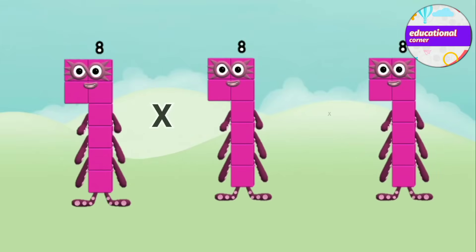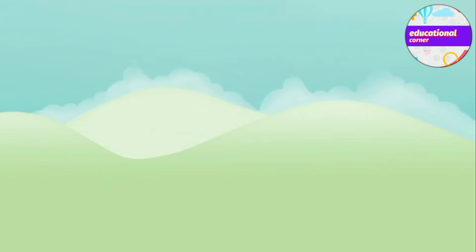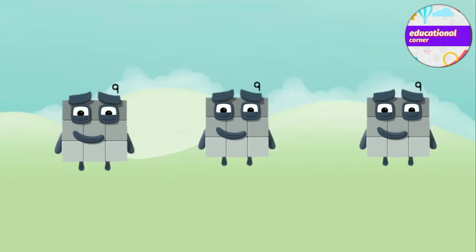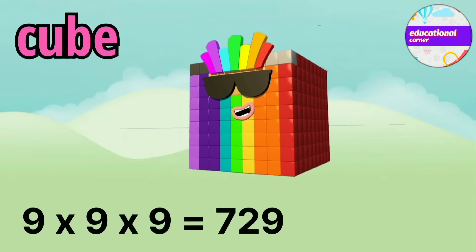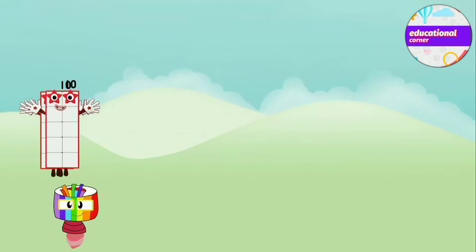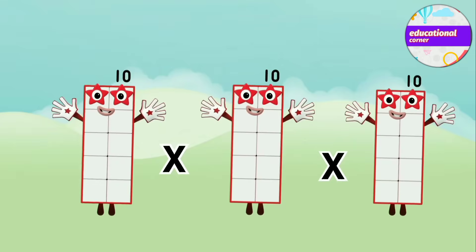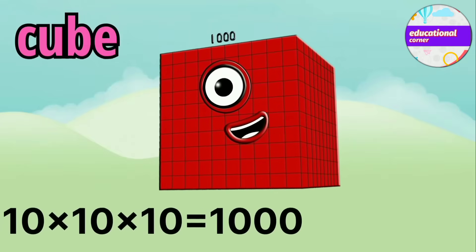8 x 8 x 8 equals 512. 9 x 9 x 9 equals 729. 10 x 10 x 10 equals 1,000.